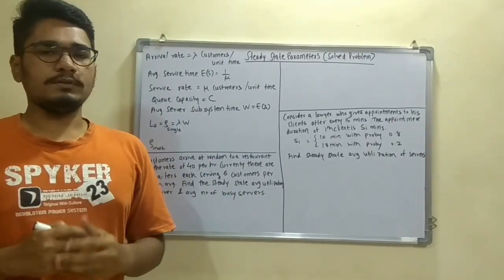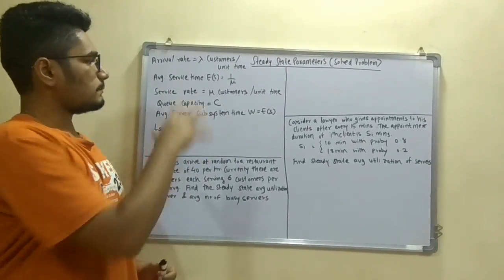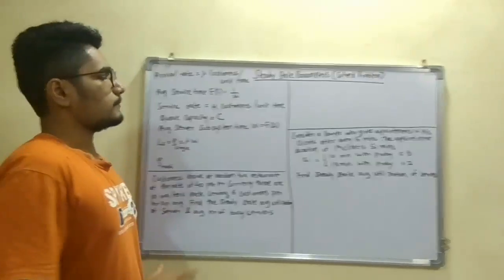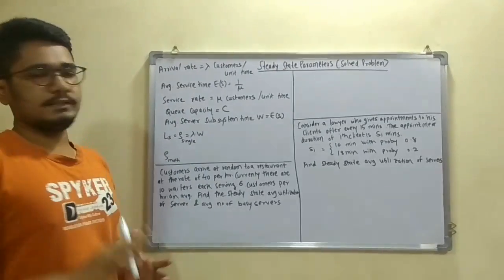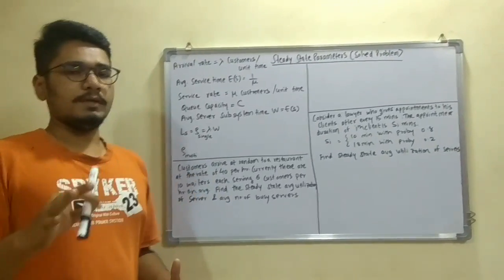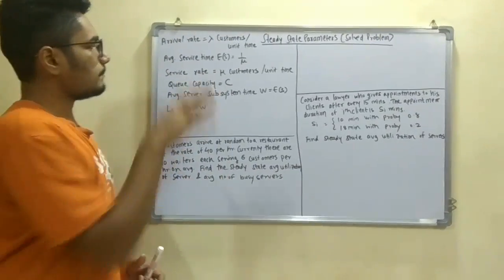So here are some concepts and some problems which we are going to discuss and some of the parameters which you need to know before solving this problem. So let's get started. So first of all we have something called as the arrival rate.